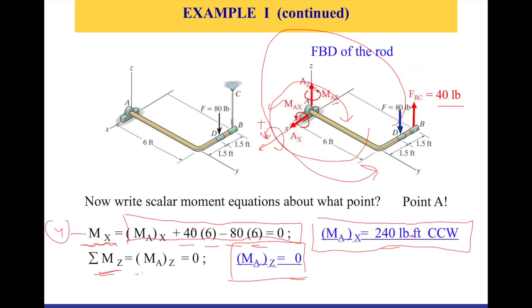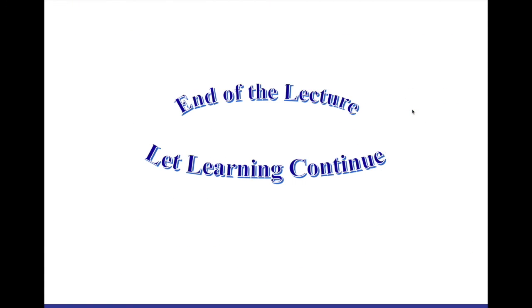We've found all the unknowns: Ax, Az, Max, Maz, and the tension in cable BC. I hope this example was helpful. There's a lot of information and it takes practice, so please follow through the example step by step. If you have questions, write in the comments or send me an email. I'm going to solve more problems, so please stay tuned. Thank you for watching — see you in the next video!